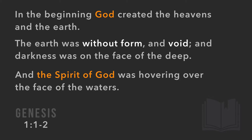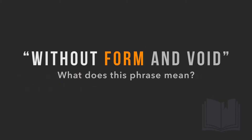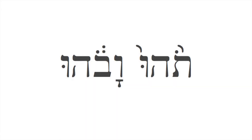The second verse is interesting because of this phrase: "without form and void." What does this phrase mean? It's a common question — what does it mean that God created the world without form and void? Did he mess up? It clearly says it was without form and void in Genesis 1:2. These are the Hebrew words that we translate that phrase into.